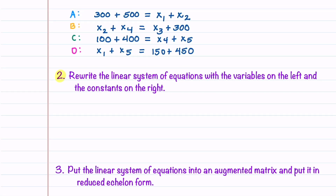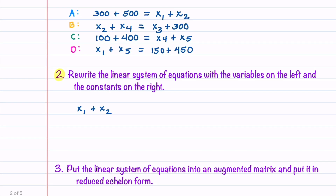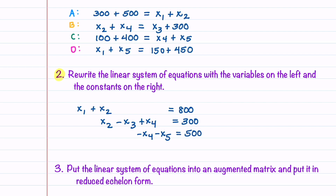Our next step is to rewrite the linear system with variables on the left and constants on the right. Our first equation is X1 plus X2 equals 800. Our second equation is X2 minus X3 plus X4 equals 300. Our third equation from intersection C is minus X4 minus X5 equals negative 500. Our last equation is X1 plus X5 equals 600.